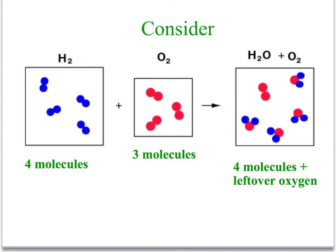Consider the reaction where we have four molecules of hydrogen reacting with three molecules of oxygen. In this reaction, we do not have the perfect ratio. The most that can be produced is four molecules of water, and then there is one molecule of oxygen left over. So in this case, we would say hydrogen is limiting and oxygen is excess. This is how most reactions actually occur.